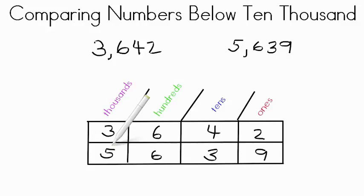If these were exactly the same, we'd then look at our hundreds. These were both the same, we'd look at the tens, and if these were both the same, we'd look at the ones. Right away, we're going to look at the thousands. In this number, 3,642, we have a 3. In this number here, 5,639, we have a 5.